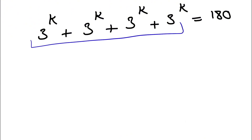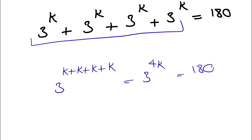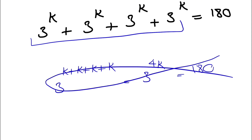On the left side we have the addition of 3 to the k, so a common mistake is to write it as 3 to the power of k plus k plus k plus k, which would give 3 to the 4k equals 180. This is actually a very common mistake that I've seen students making, and this is not the correct way to go with this question.